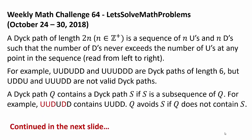Now let's get to this week's challenge, and this is the longest challenge yet, so bear with me. A Dyck path of length 2n, where n is a positive integer, is a sequence of U's and D's such that the number of D's never exceeds the number of U's at any point in the sequence read from left to right.